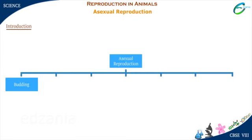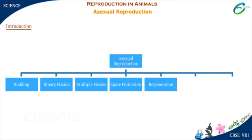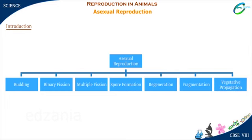There are different methods of asexual reproduction: budding, binary fission, multiple fission, spore formation, regeneration, fragmentation, and vegetative propagation.